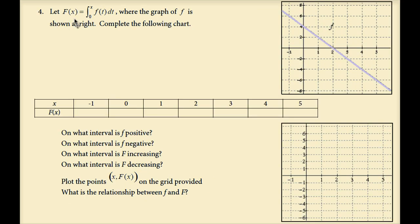Let uppercase F of x equal the integral from 0 to x of lowercase f of t dt, where the graph of f is shown at right. Complete the following chart. The lower endpoint of integration is 0. To find F of negative 1, we calculate the area from 0 to negative 1 — a trapezoid with bases 4 and 6 summing to 10, times width 1, equals 10, half is 5. This is a positive 5, but since we're moving left, the function value is negative 5.